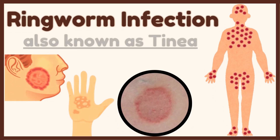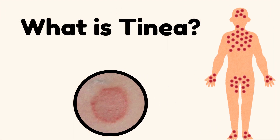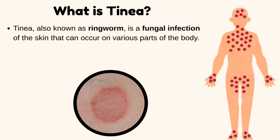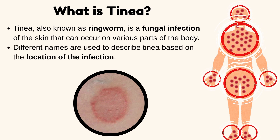Ringworm infection, also known as tinea. Tinea, also known as ringworm, is a fungal infection of the skin that can occur on various parts of the body. Different names are used to describe tinea, based on the location of the infection.